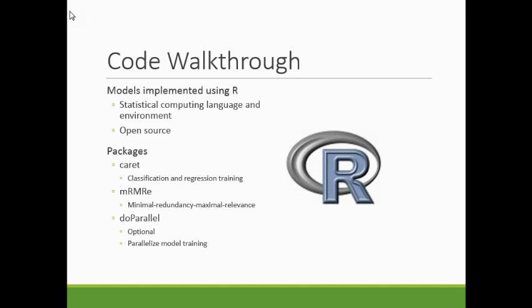For the actual implementation of my project, it was all done using the programming language R, which is a statistical computing language and environment — it's open source. So if you don't want to pay for MATLAB or similar tools, it's a great option. I had a lot of fun learning it over the past couple of weeks. To run the code, three packages are required, also free: the caret package (Classification And REgression Training), the MRMRE package for minimal redundancy maximal relevance — where the E stands for ensemble since you can do repeated MRMR selections — and an optional doParallel package that allows you to use multiple cores in your computer.